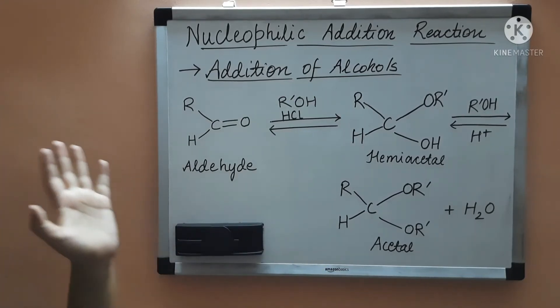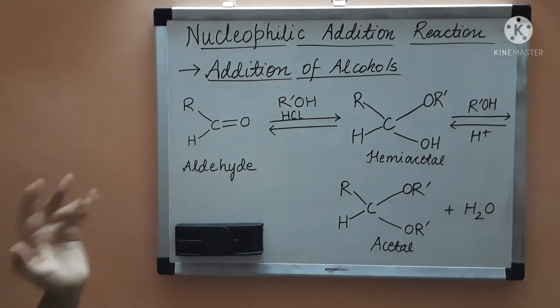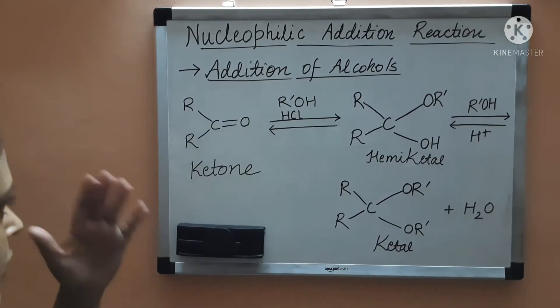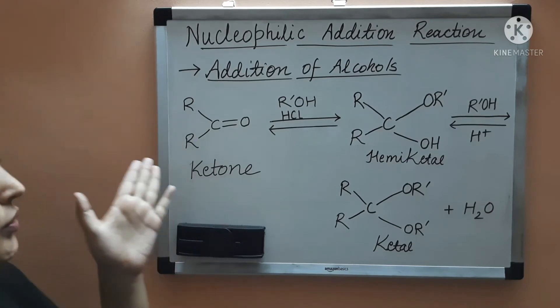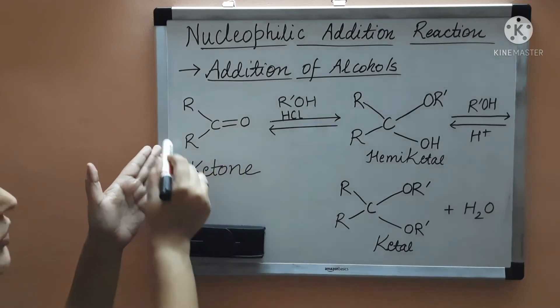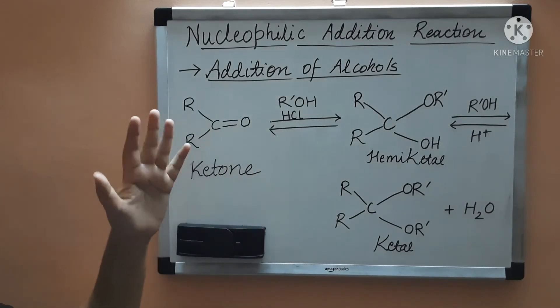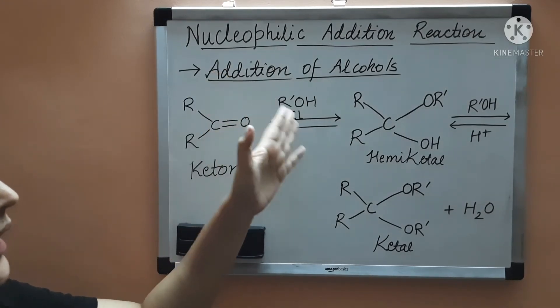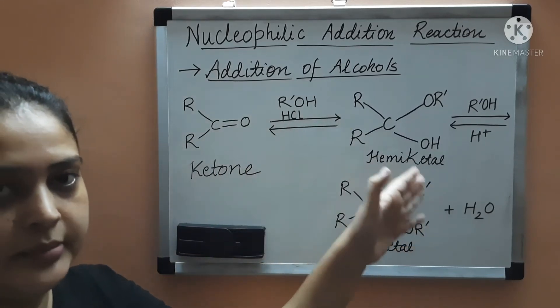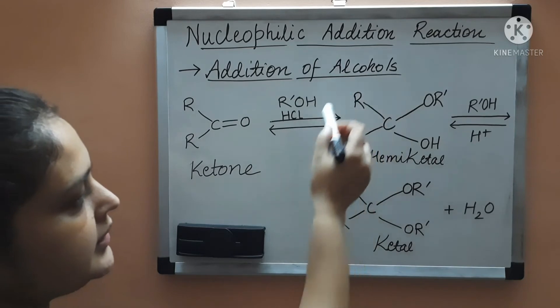Similarly if there is ketone instead of aldehyde then what will happen? I will show you. So if you are taking ketone, here instead of hydrogen atom you will add alkyl group and therefore this is ketone. You are adding now the alcohol to it, then you will get hemiketal instead of hemiacetal.